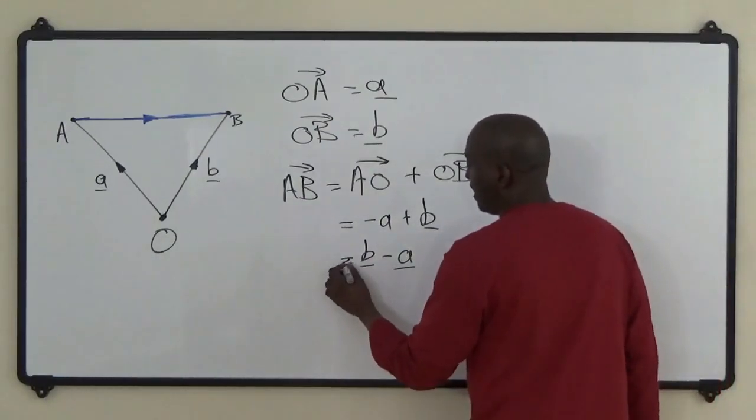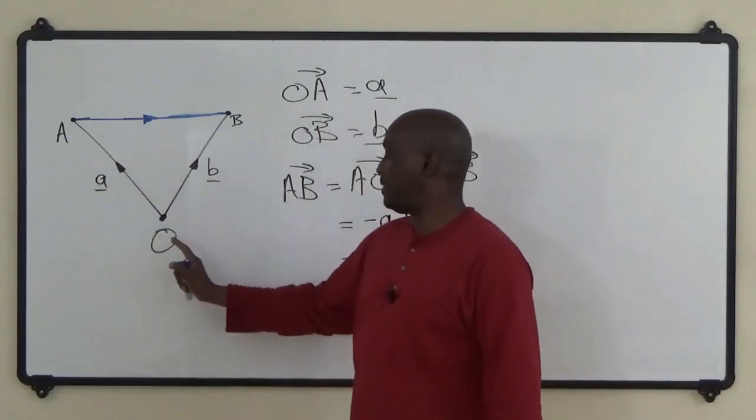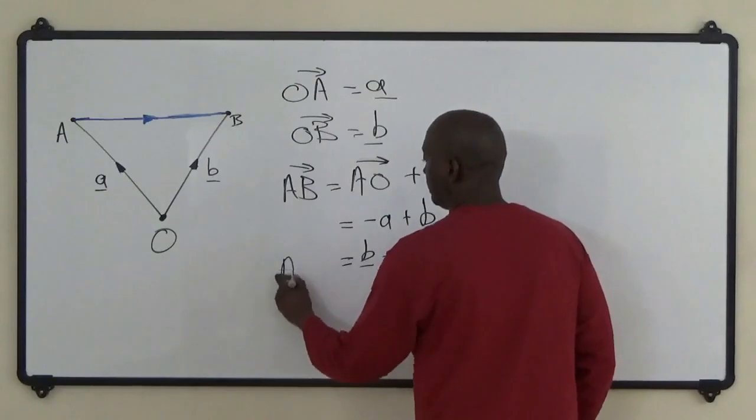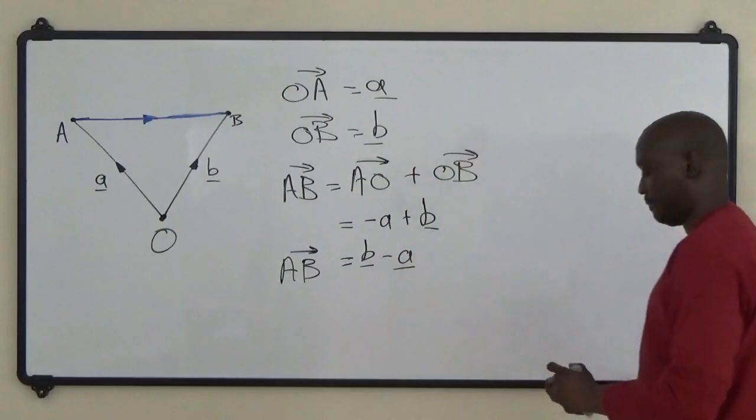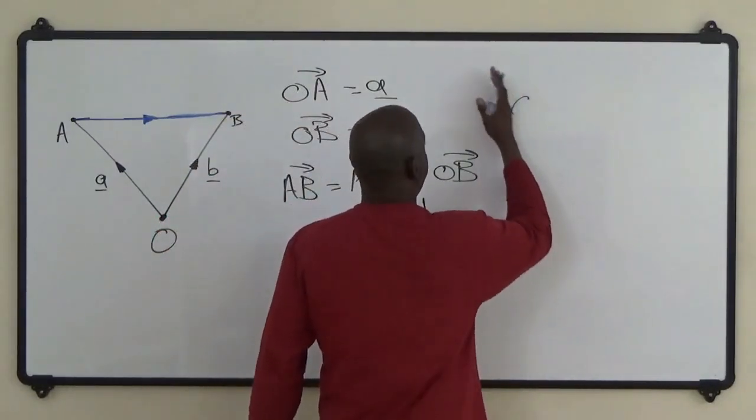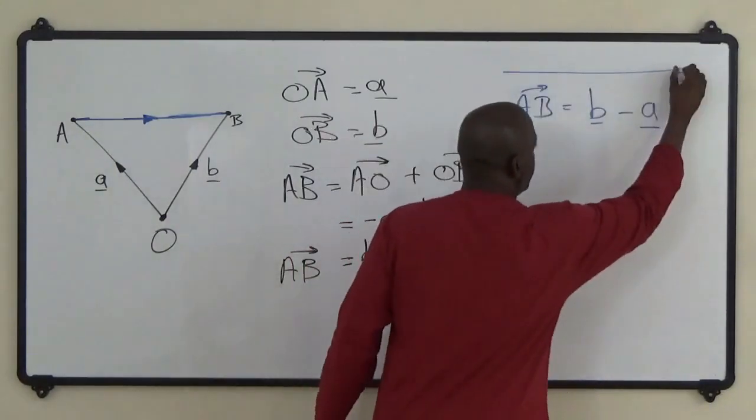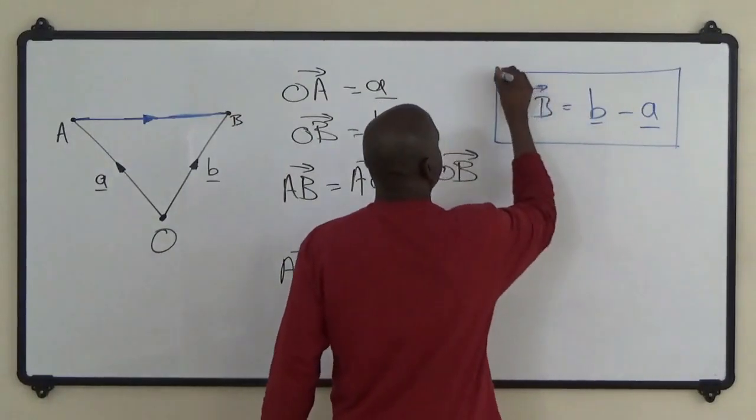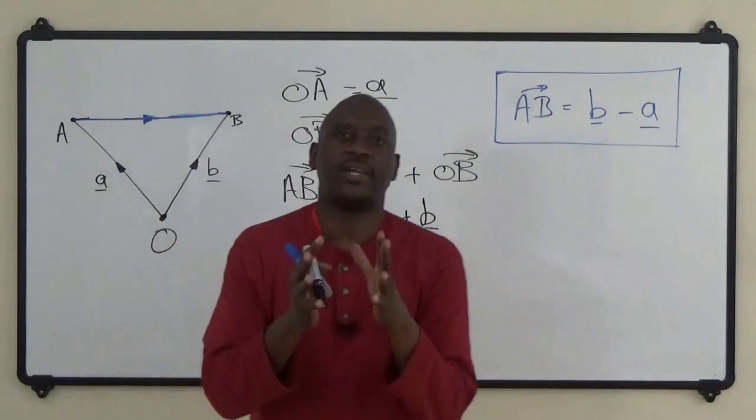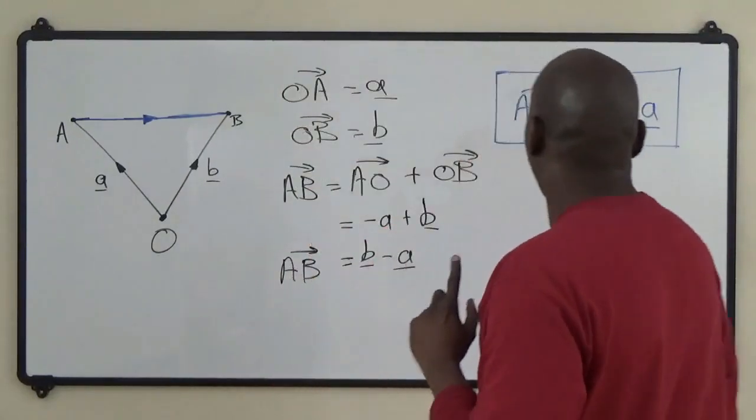So in general, if we have two position vectors and define OA as a and OB as b, then AB equals b minus a. This is something you could roll off your tongue and lock away for reference. Remembering, however, that this is only the case if a and b are position vectors, meaning the origin is implied in all of this.